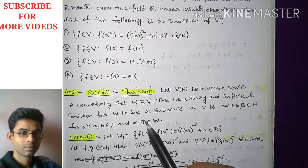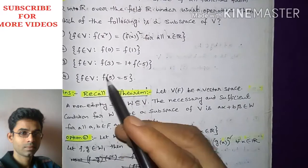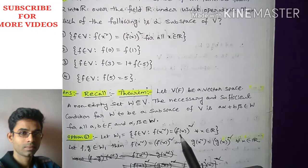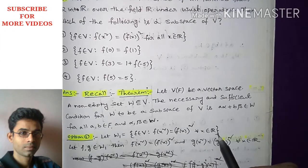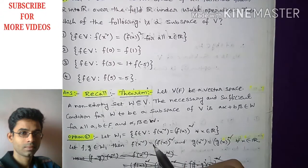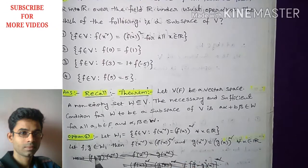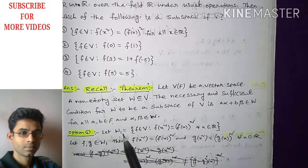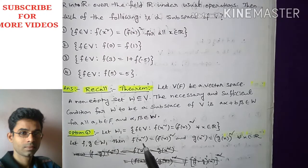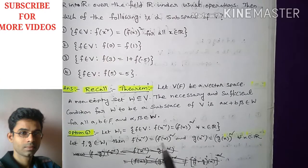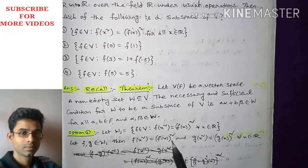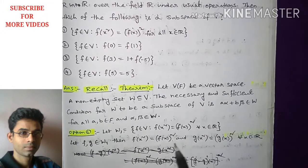We will check option-wise. For option number one, let W₁ be the given set: all f in V such that f(x²) = f(x)² for all x in R. First we verify whether this is a subspace or not. Take two elements f, g in W₁. Then f in W₁ implies f(x²) = f(x)², and g in W₁ implies g(x²) = g(x)² for all x in R.